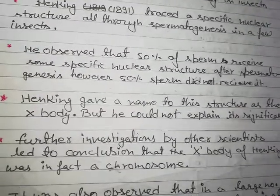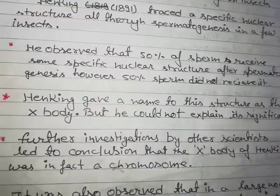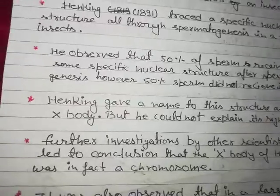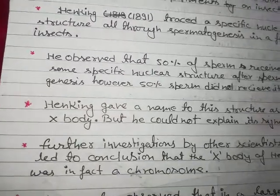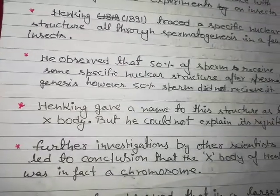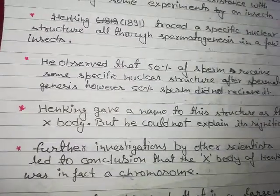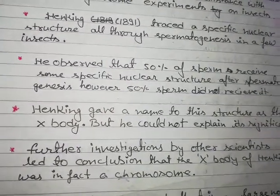Further investigation by other scientists led to the conclusion that the X-body of Henking was in fact a chromosome, and after further study they concluded that it is actually an X chromosome present in 50 percent of the sperm.